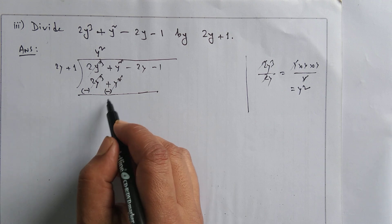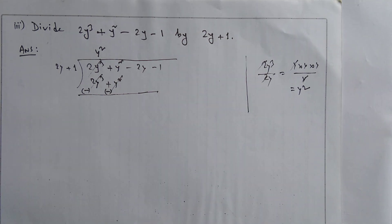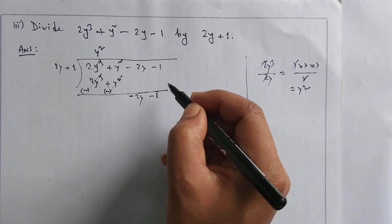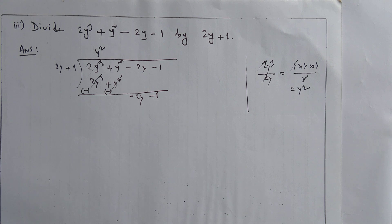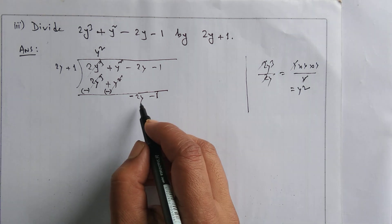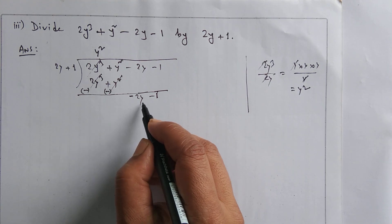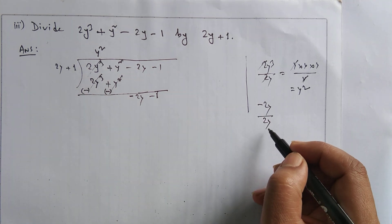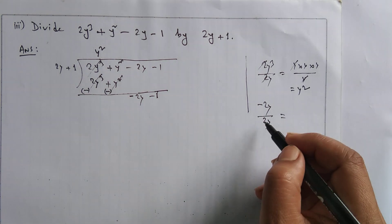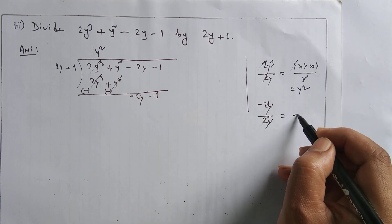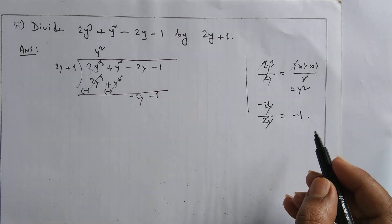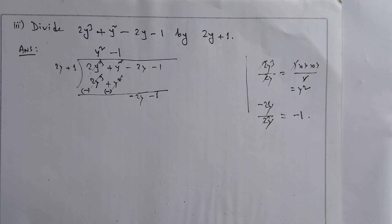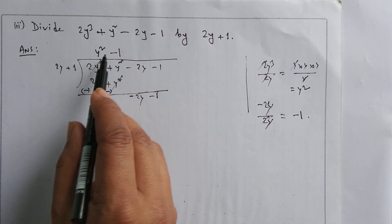Zero is left, so we don't write it. From the upper line, -2y and -1 come down — the sign does not change when brought down. Now -2y is the first term in the next line, and 2y is the first term in the divisor. The 2s cancel and y cancels too, so -2y divided by 2y goes minus one times.